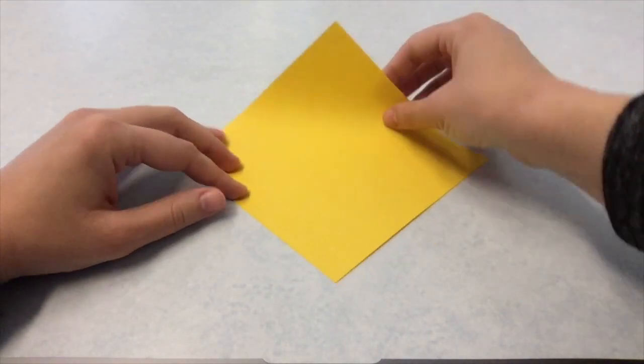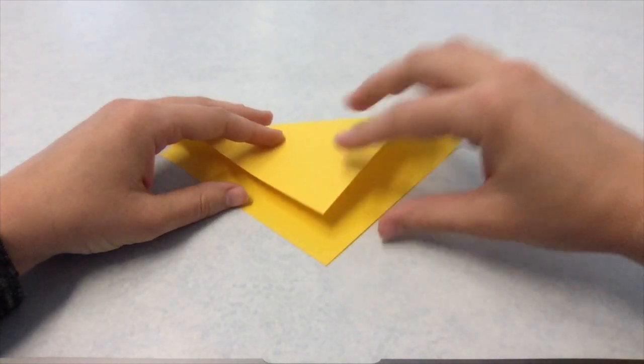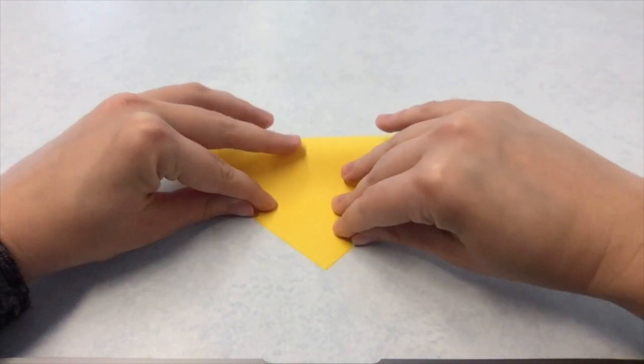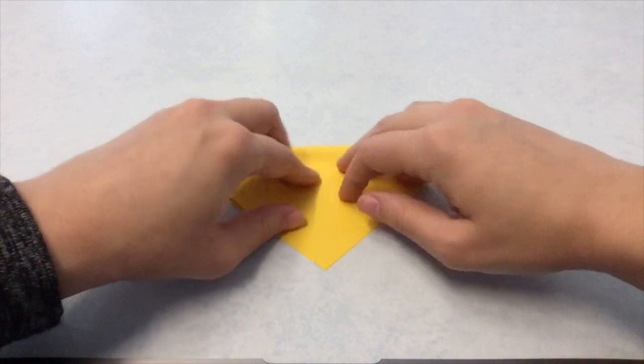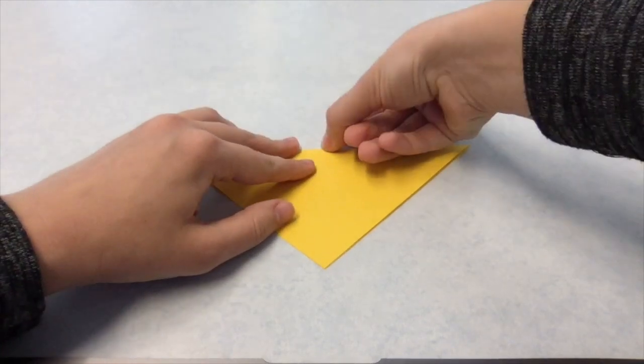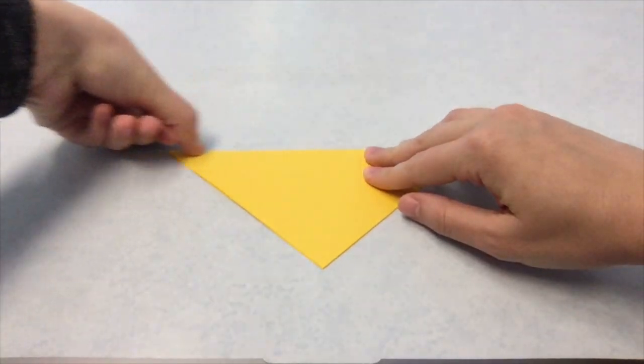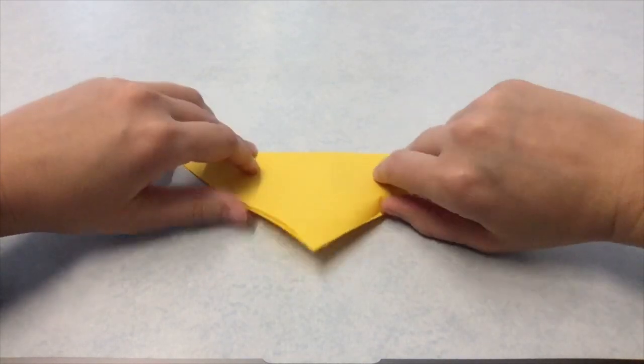To start, first take your sheet of origami paper, which is a perfect square, and fold it in half, lining the corners up to create a triangle. Each time you make a fold, remember to crease it down with your fingernail. This will strengthen your fold and give you a guide to use in the next steps.